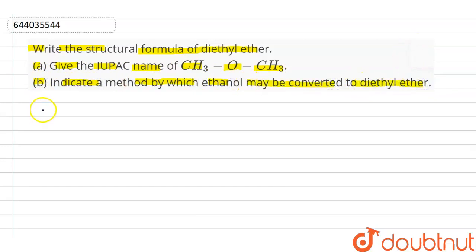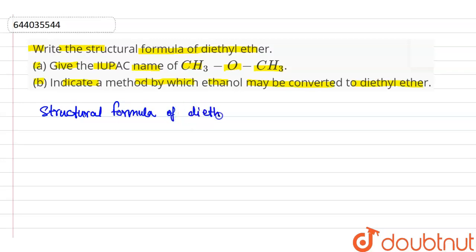First, we write the structural formula of diethyl ether, that is CH3OCH3.